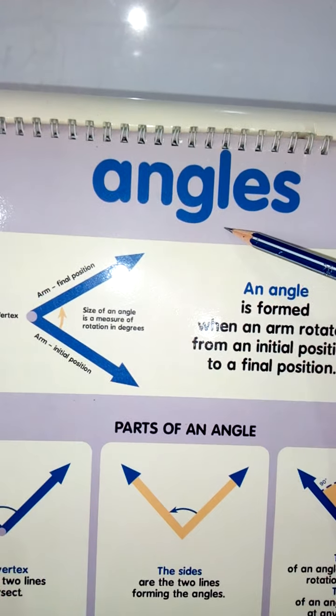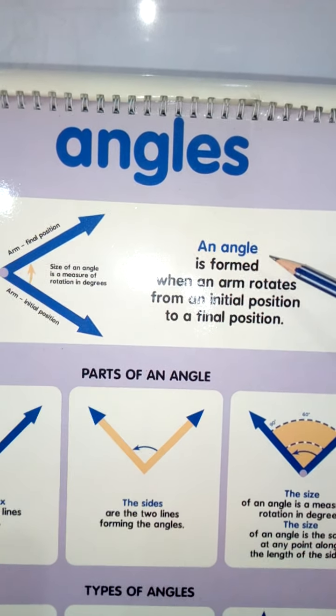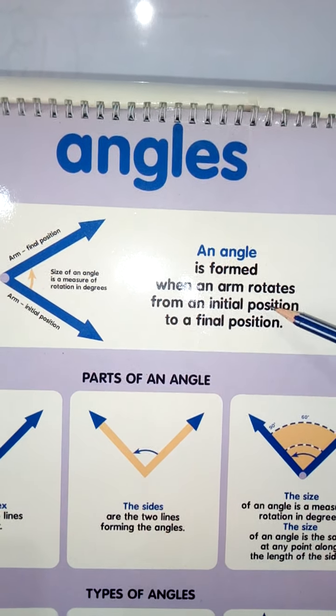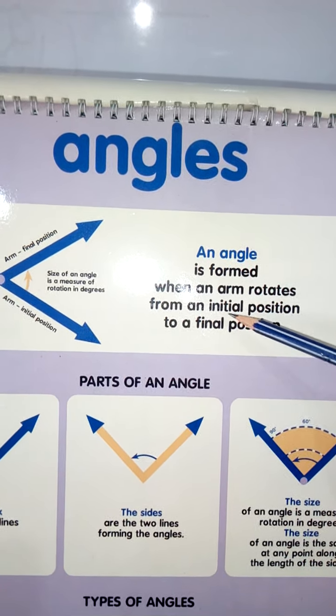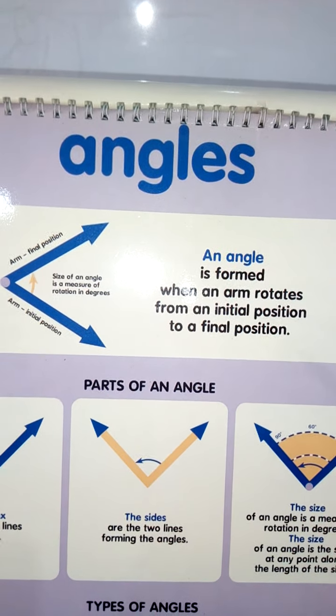It is known as angle. So, we can say that an angle is formed when an arm rotates from an initial position to a final position.